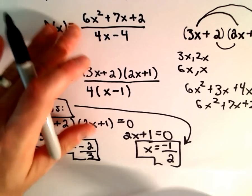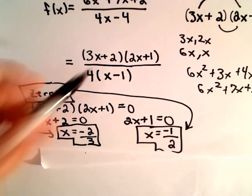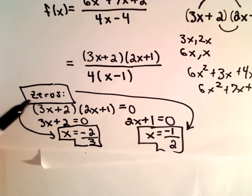So it's not something that you can just pass over. But in this case, we don't have common factors, so I can just set the numerator equal to zero to get the zeros.